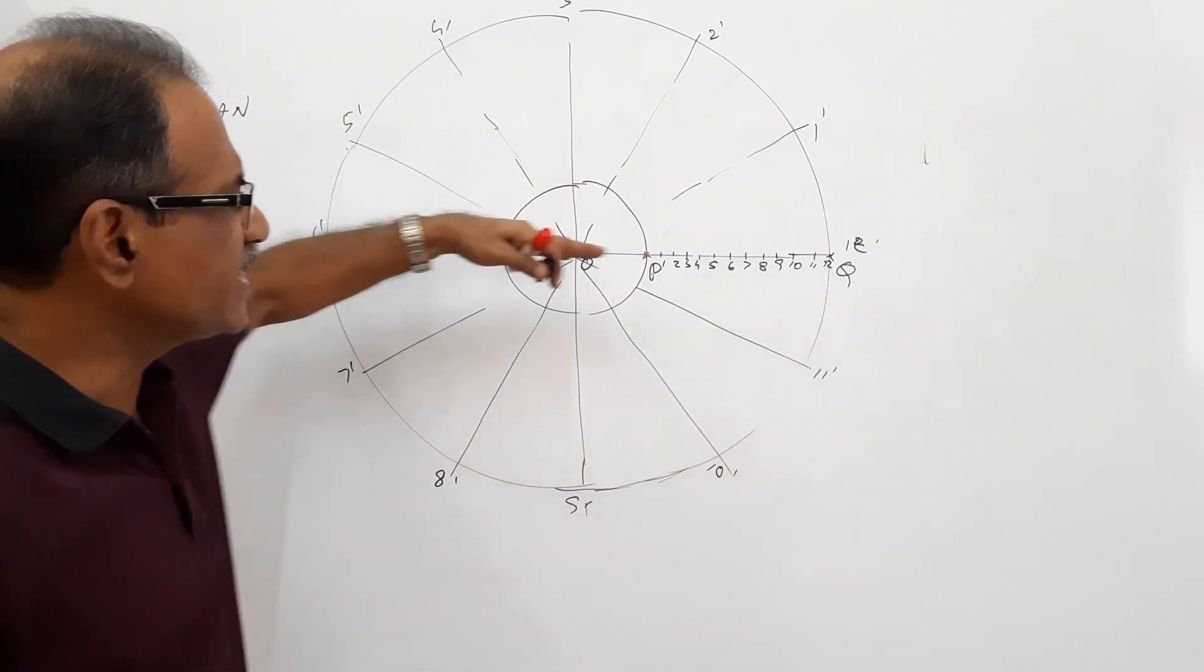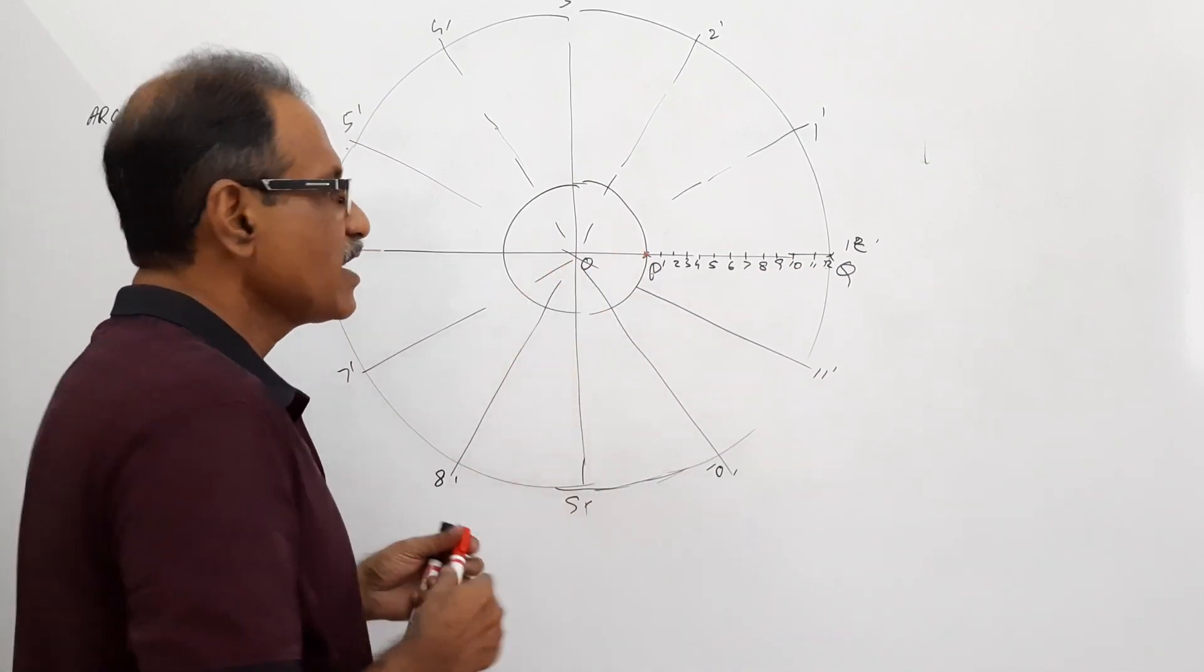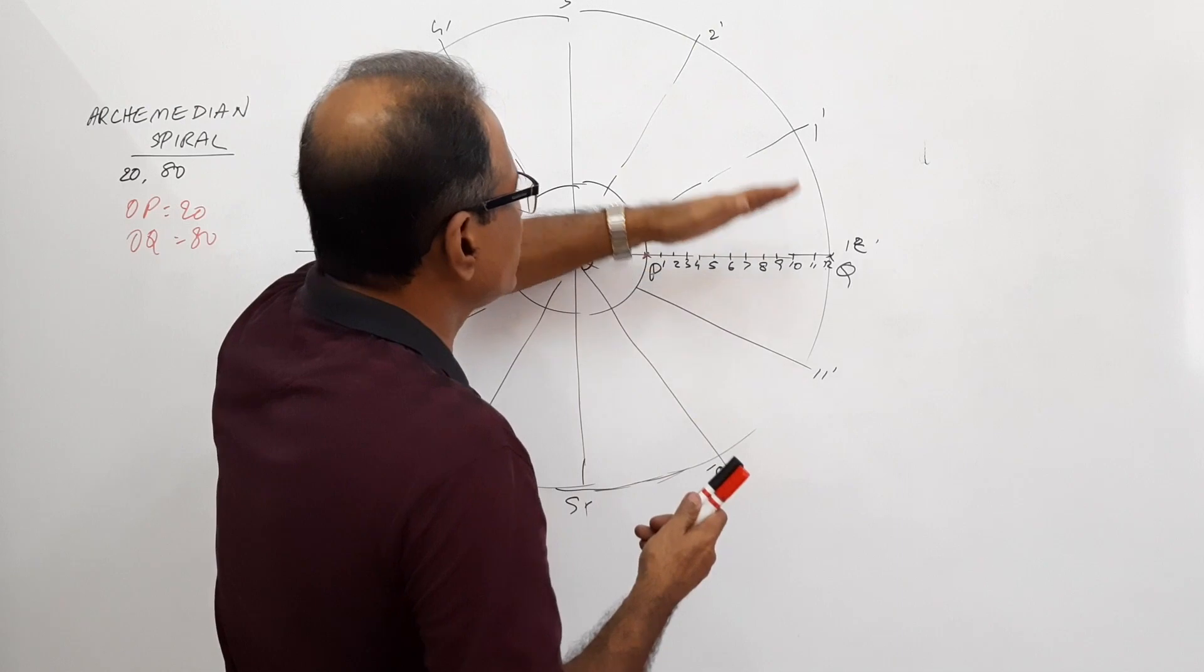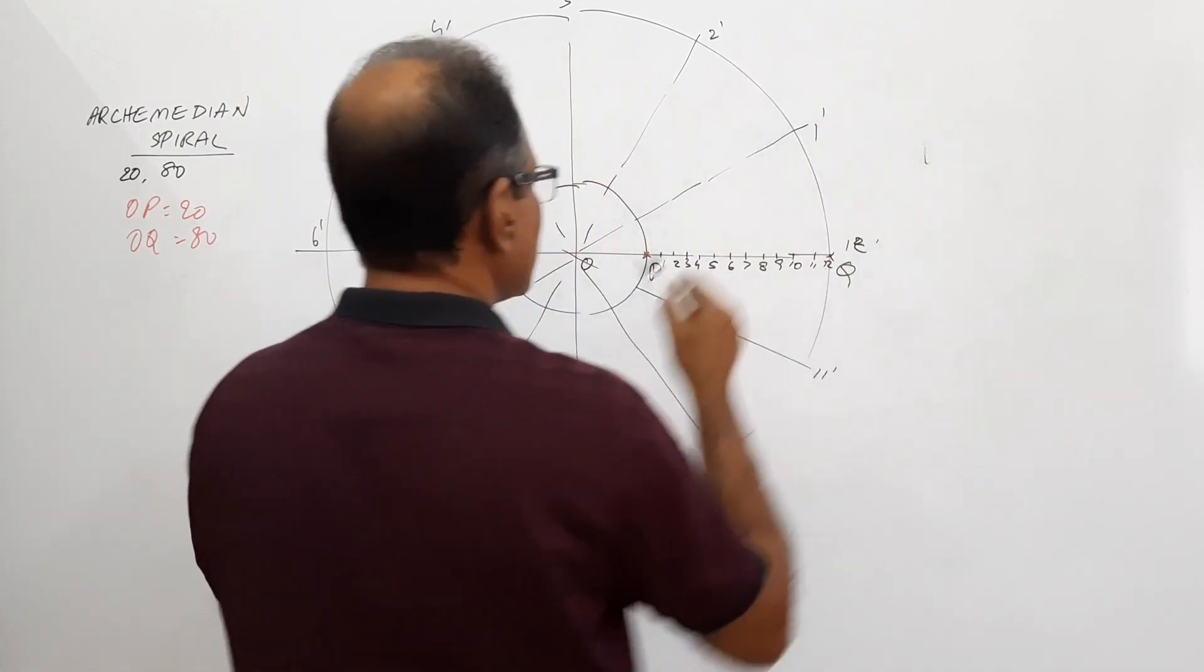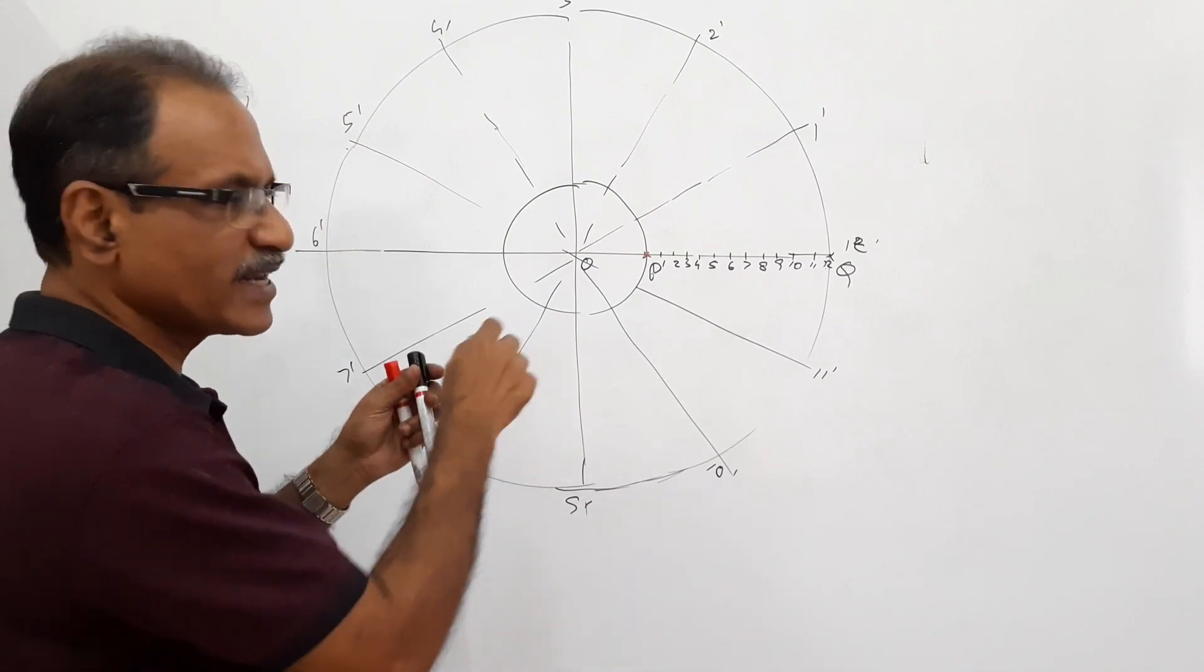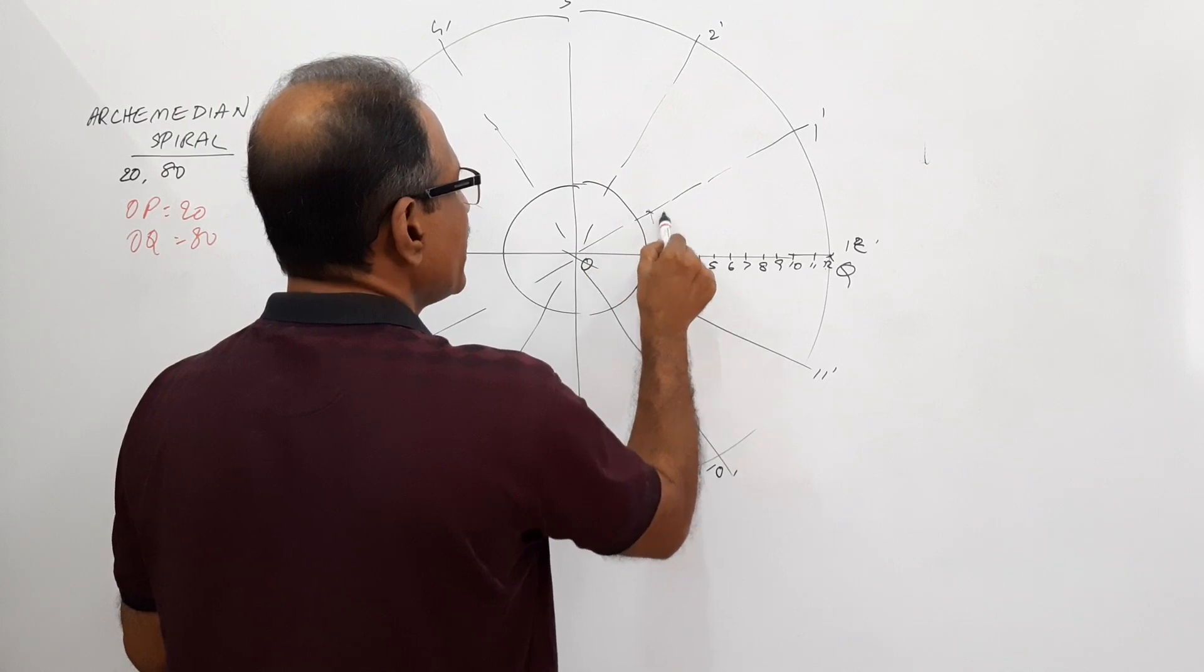When the link is initially in the horizontal position, the moving point is at P. When the link rotates and comes in this position, which position? O-1. Where is the moving point? Or where is the translating point? O as center, O1 as radius, draw an arc. P1. That's the position of the moving point.